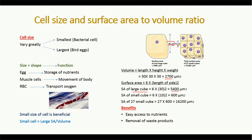For one small cube with side length 10 micrometers, the surface area is 600 square micrometers. For all 27 small cubes combined, the total surface area is 16,200 square micrometers. This means the total surface area of the 27 small cells is much larger compared to the one large cube.